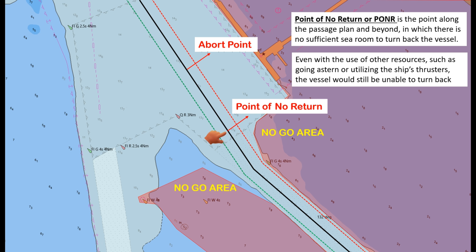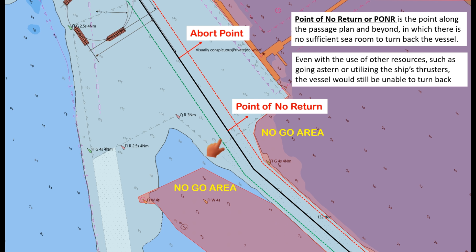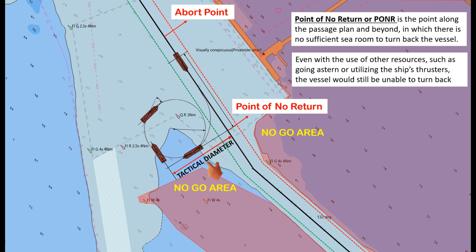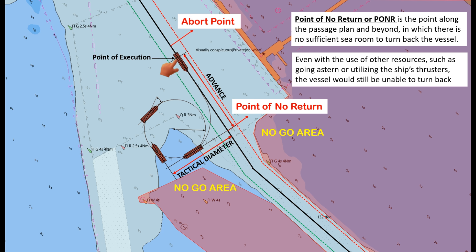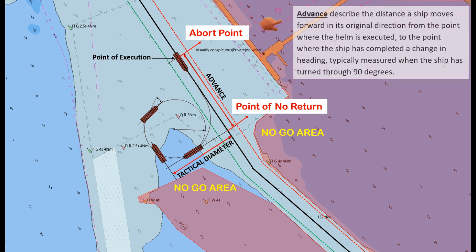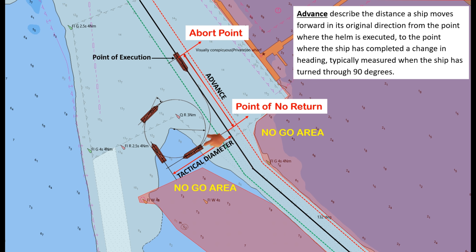To determine the abort point, we need the ship's tactical diameter and advance. If this is the point of execution where we execute our helm, then our abort point is here. Advance describes the distance a ship moves forward in its original direction from the point where the helm is executed to the point where the ship has completed a change in heading, typically measured when the ship has turned through 90 degrees.